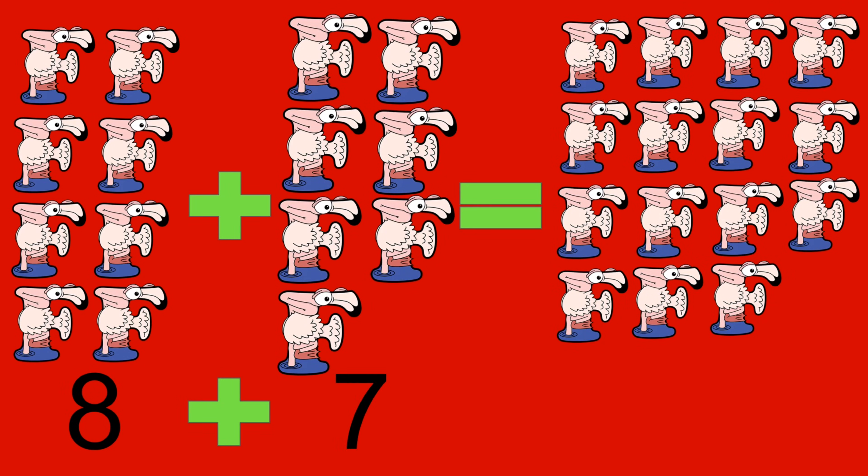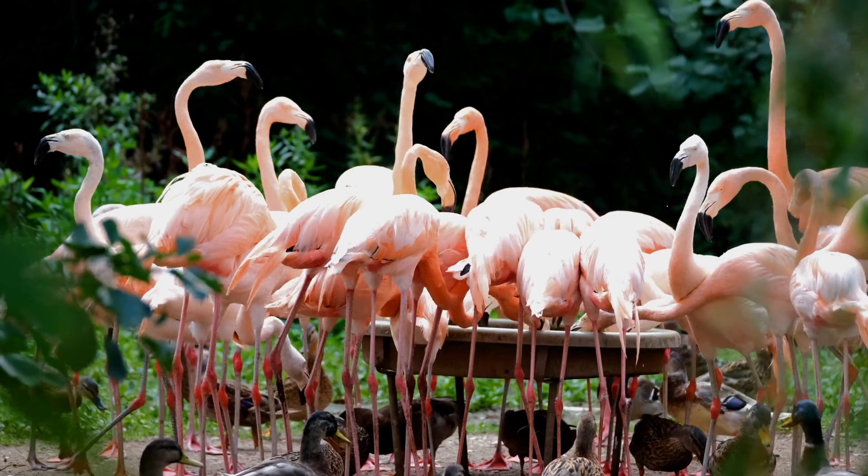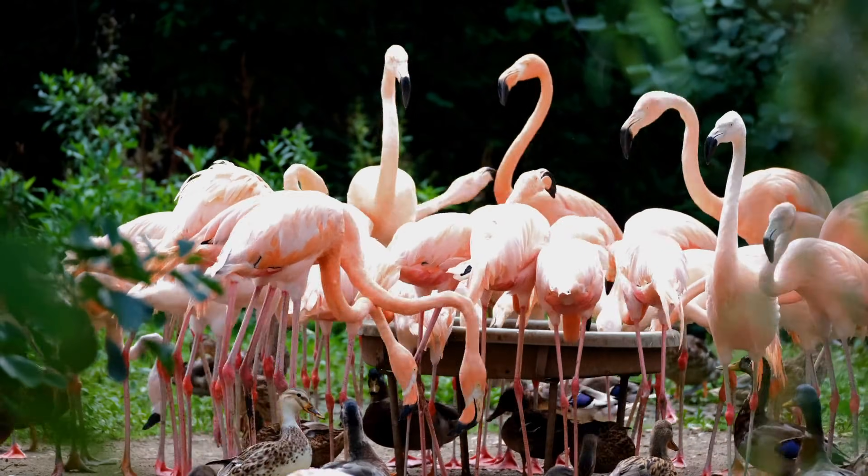8 flamingos plus 7 flamingos equals 15 flamingos. 8 plus 7 equals 15. Flamingo.